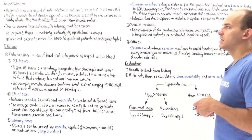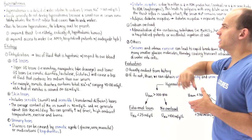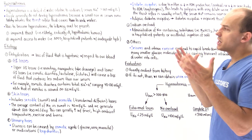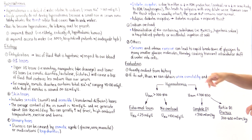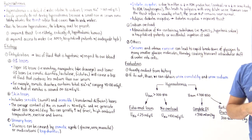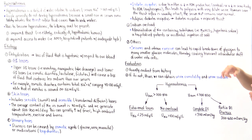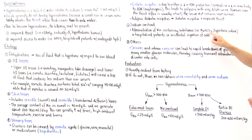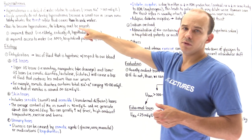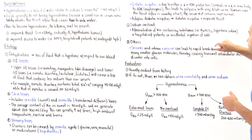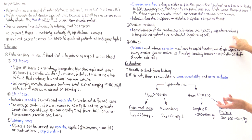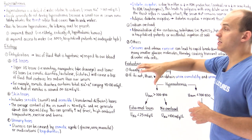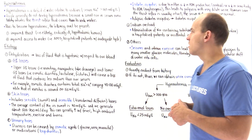Less commonly, there are other causes of hypernatremia. We can have sodium overload, which generally happens in hospitalized settings where sodium-containing solutions are administered. For example, in patients with severe metabolic acidosis, we give sodium bicarbonate, which increases sodium levels in the blood. In patients with traumatic brain injury, we can give hypertonic saline — which contains more sodium than blood — causing hypernatremia.